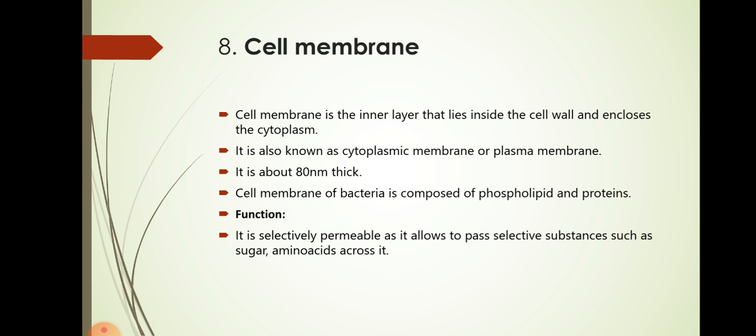The next structure is cell membrane. It is the inner layer that lies inside the cell wall and encloses the cytoplasm. It is also known as cytoplasmic membrane or plasma membrane. It is about 80 nanometers thick. The cell membrane of bacteria is composed of phospholipids and proteins. The function of cell membrane is selective permeability as it allows to pass selective substances such as sugars, amino acids across it into the cell.